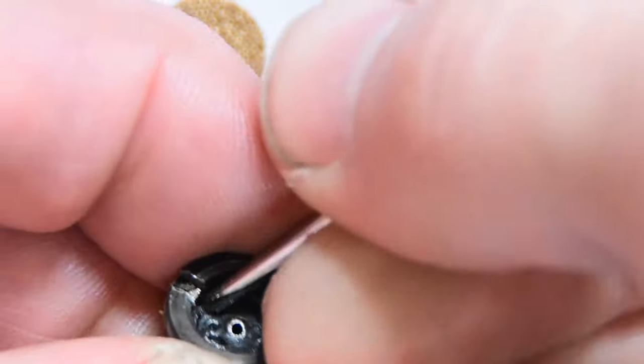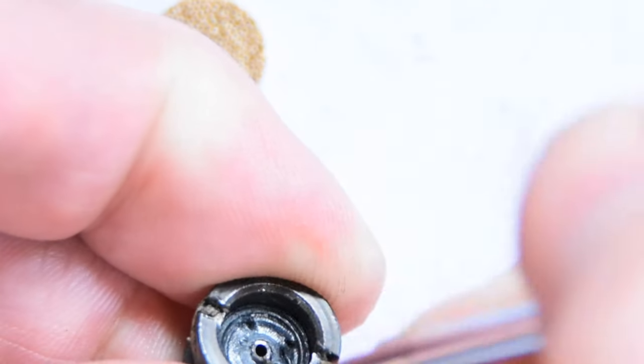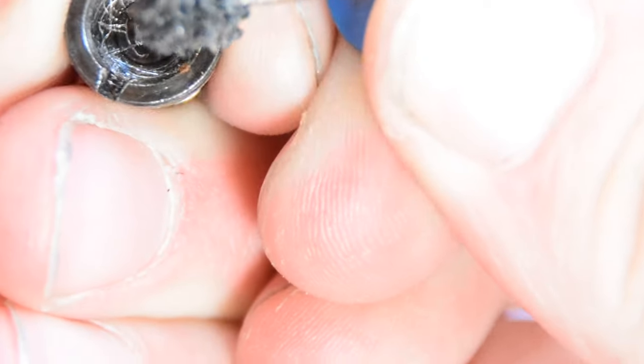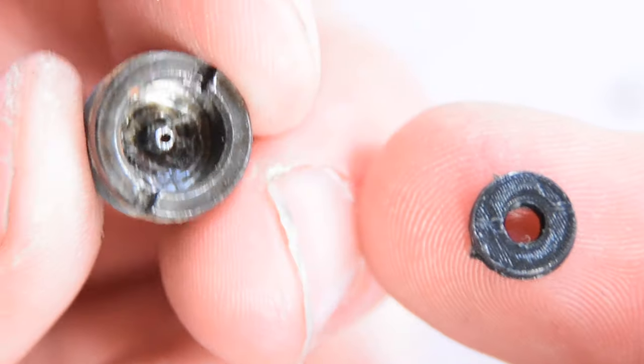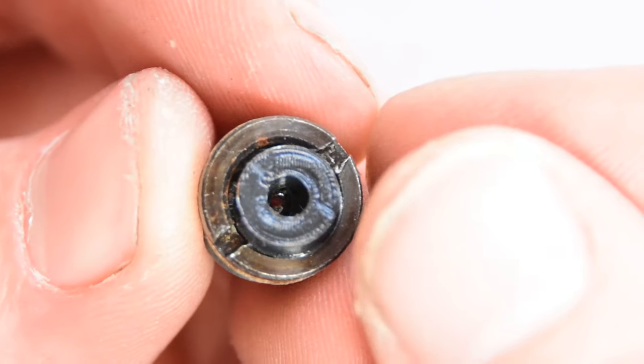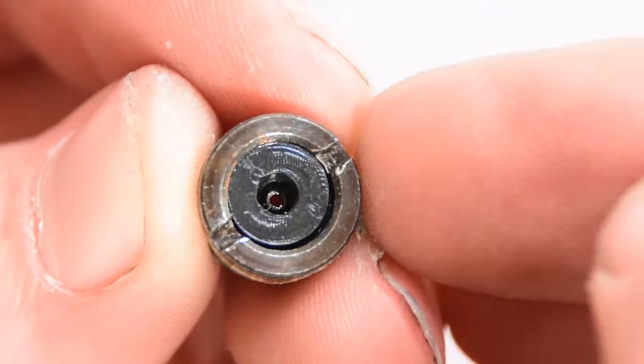First you need to pry the old seal out. It's not so easy, but a fine needle should do the trick. Now you can replace it with a new upgraded seal. Just push it in a bit and leave it like this.